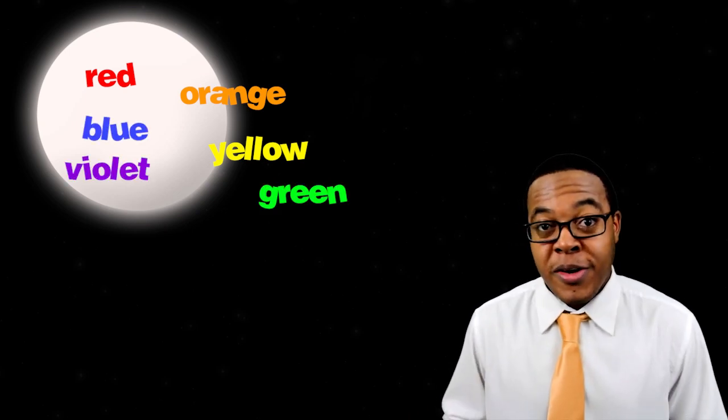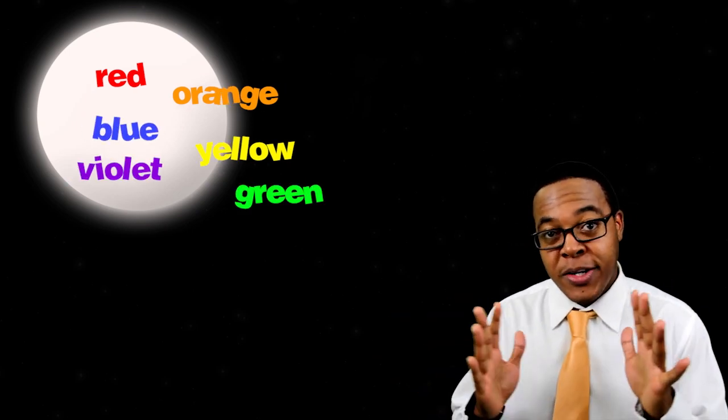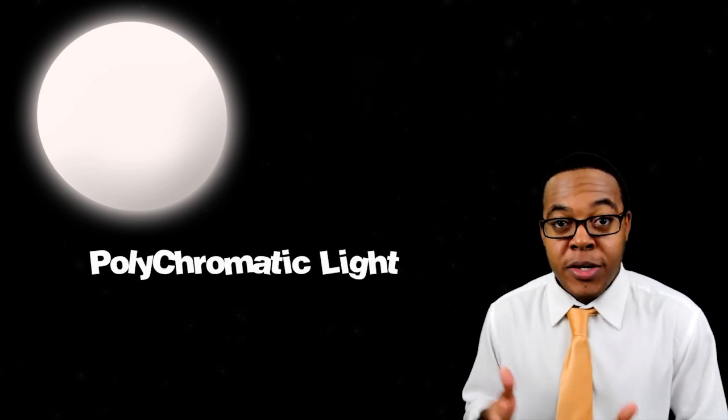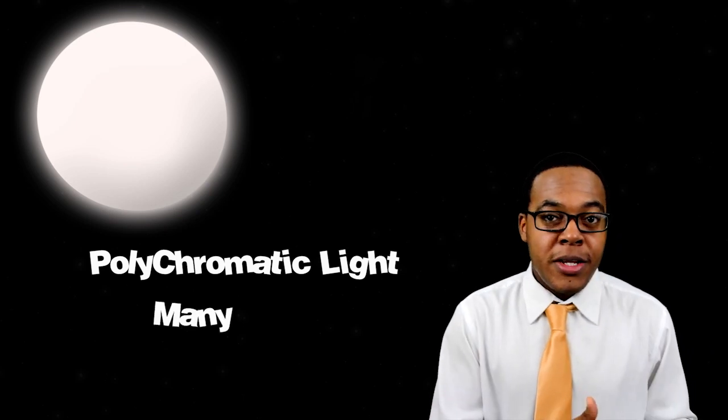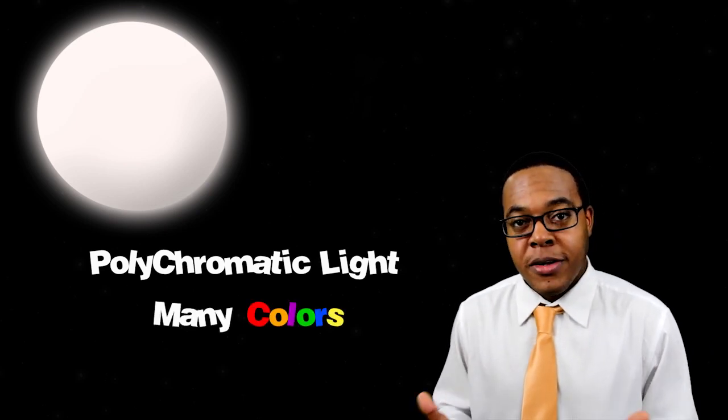The Sun emits the visible spectrum of light that's red, orange, yellow, green, blue, all of those colors. Now to us when you combine all of those colors together it appears to be white. And white light is also known as polychromatic light. Poly meaning many and chromatic meaning color.